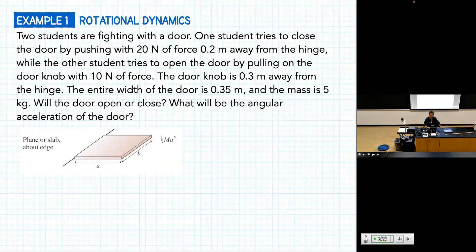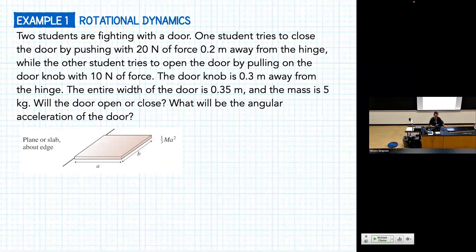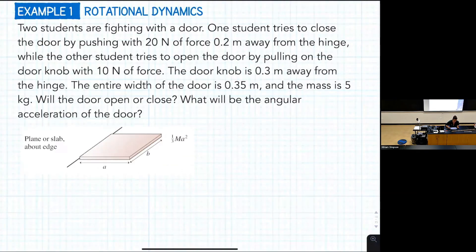We're going to do a problem where we actually calculate the angular acceleration. Two students are fighting over a door. One student tries to close the door by pushing with 20 newtons of force 0.2 meters away from the hinge, while the other student tries to open the door by pulling on the doorknob with 10 newtons of force. The doorknob is 0.3 meters from the hinge, the total door width is 0.35 meters, and the mass is 5 kilograms. We want to know: will the door open or close?